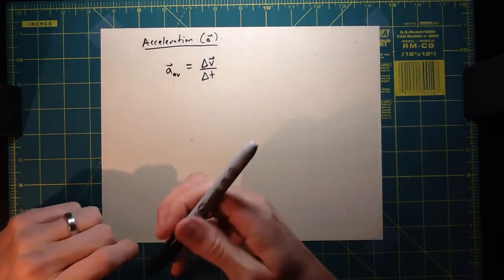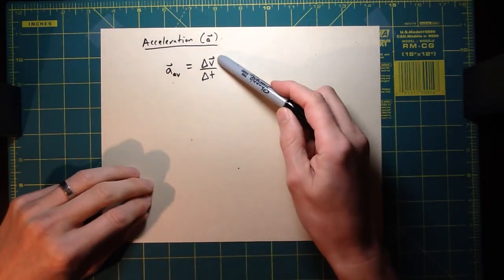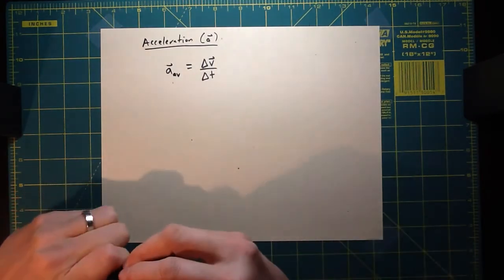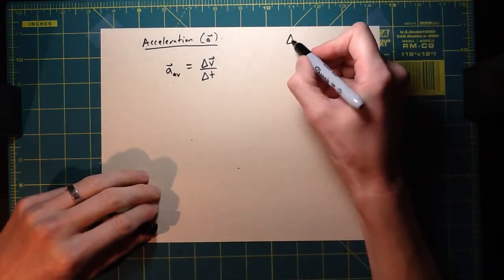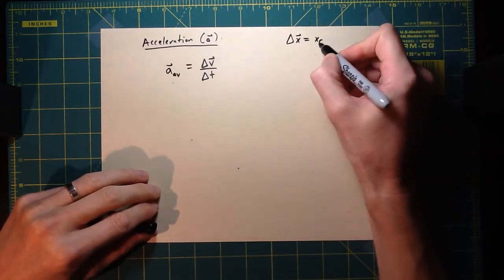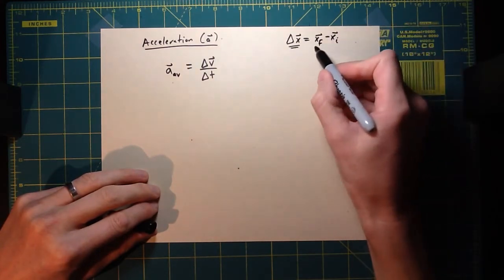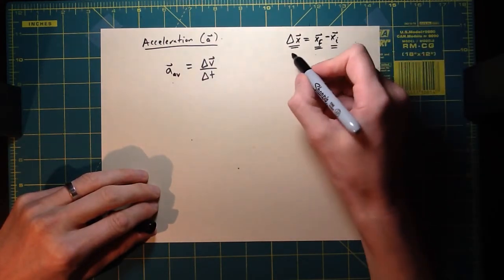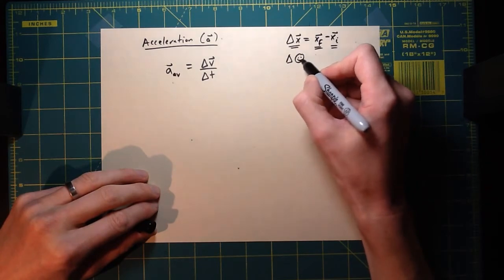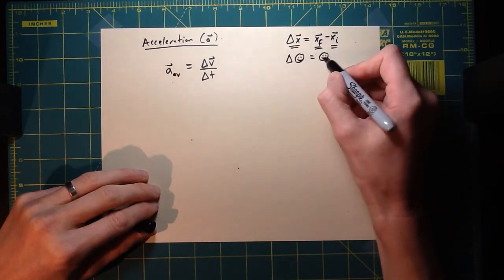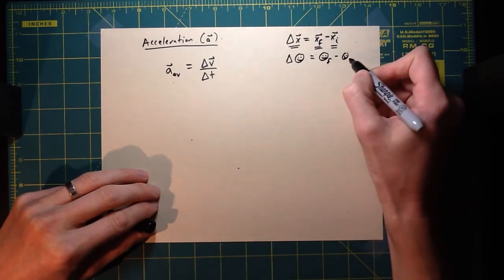So average acceleration is defined as delta V over delta T. Now let me remind you about the delta notation. We've already seen it once relating displacement to position vectors. This actually works with anything.